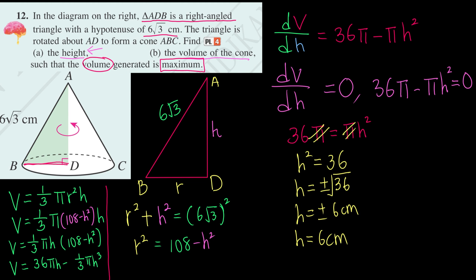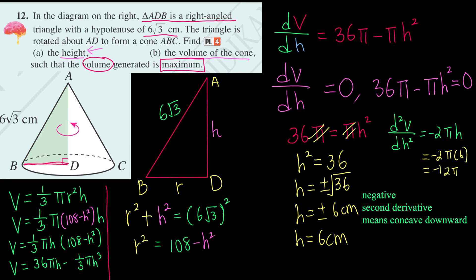We want to check whether this is a maximum or minimum, so we carry out the second derivative: d²V/dh² = −2πh. The derivative of the constant 36π is 0. Substituting h = 6: d²V/dh² = −12π, which is less than 0. This means it's concave downward — so indeed it's a maximum.